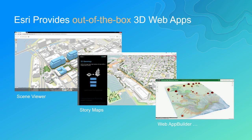ArcGIS already provides out-of-the-box 3D web applications. The scene viewer is the entry point to create and consume web scenes, mashing up all your different layers in ArcGIS Online. Story Maps provides a more vertical experience to tell stories with your already-created web scenes — you can combine web maps and web scenes in one story map. The web app builder lets you configure the experience, widgets, look and feel, and even write your own widget.